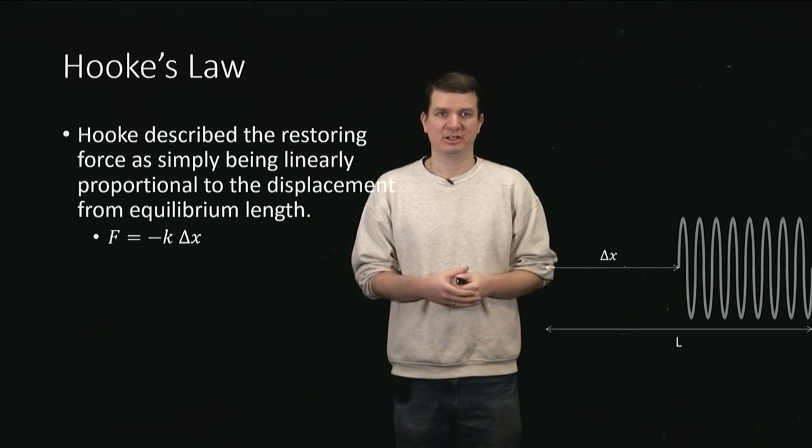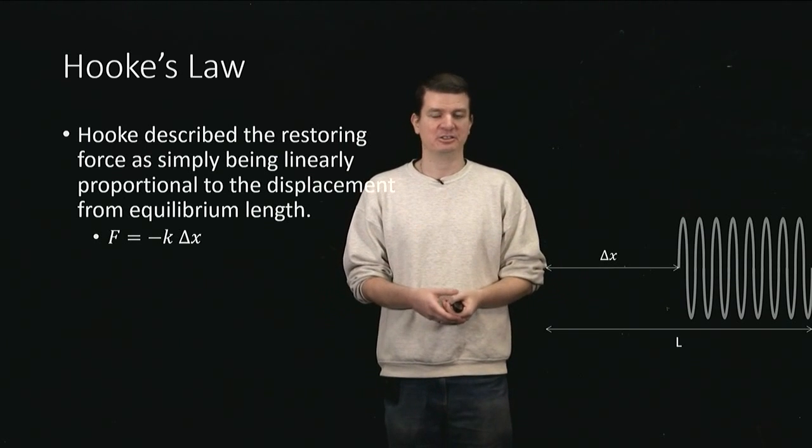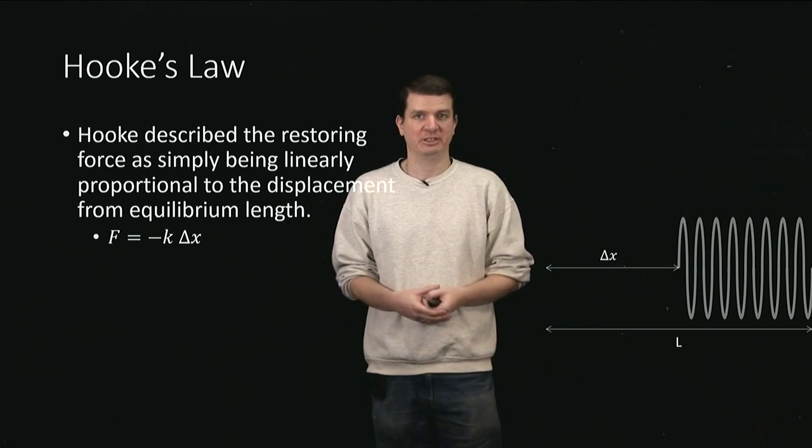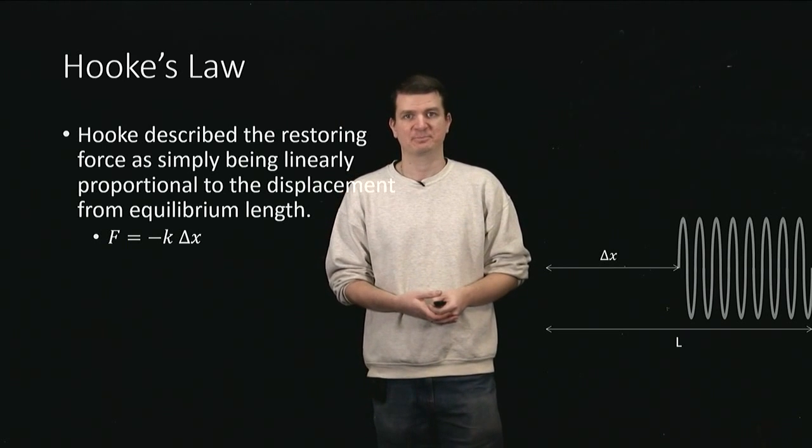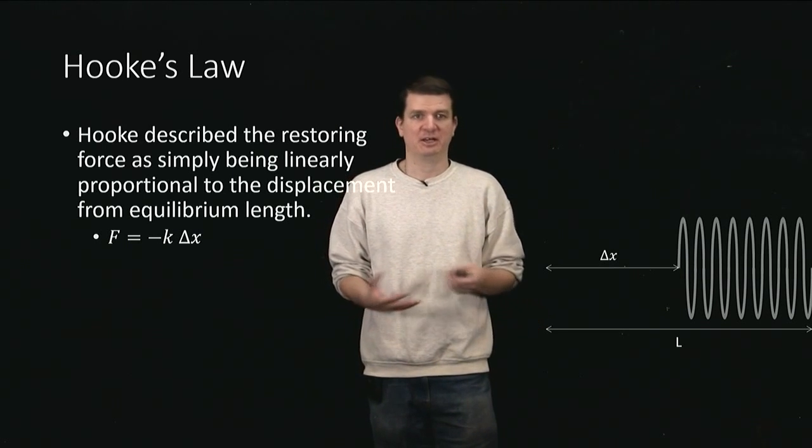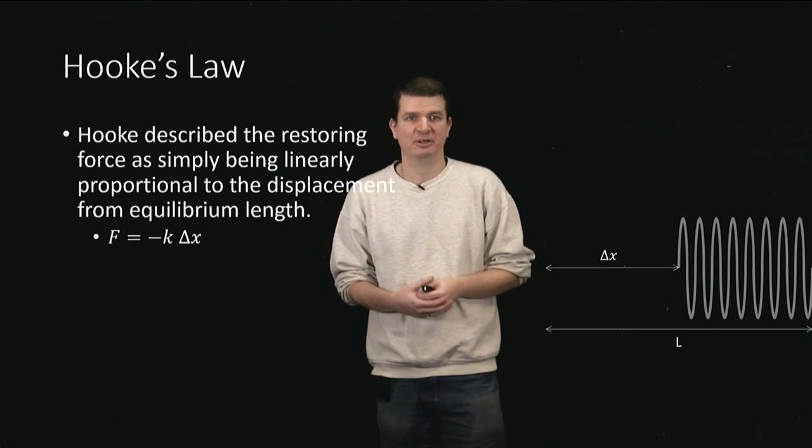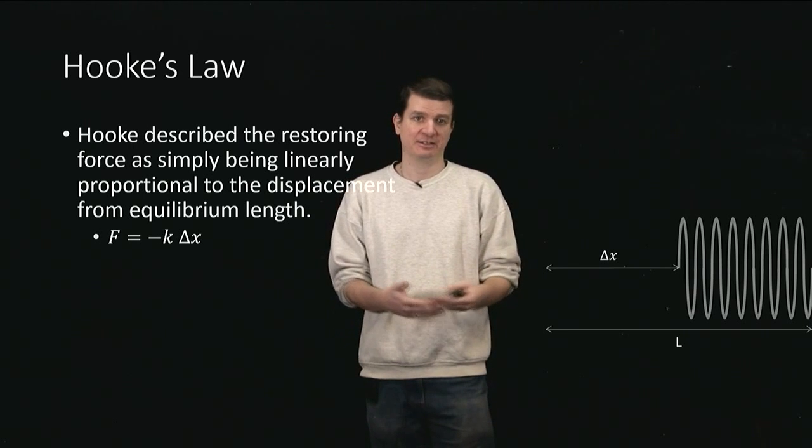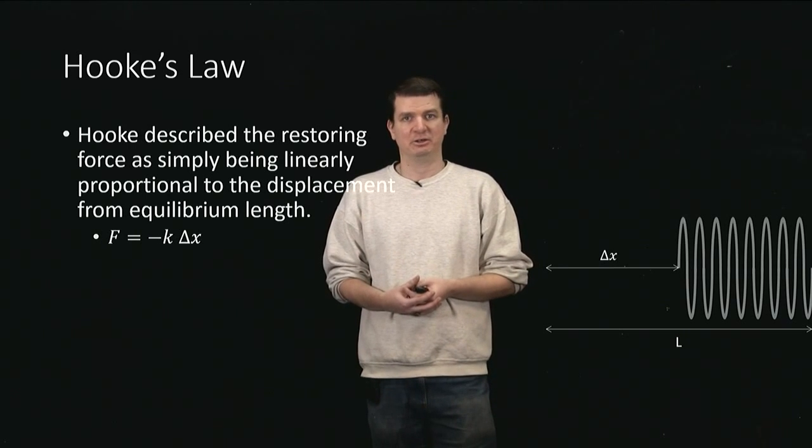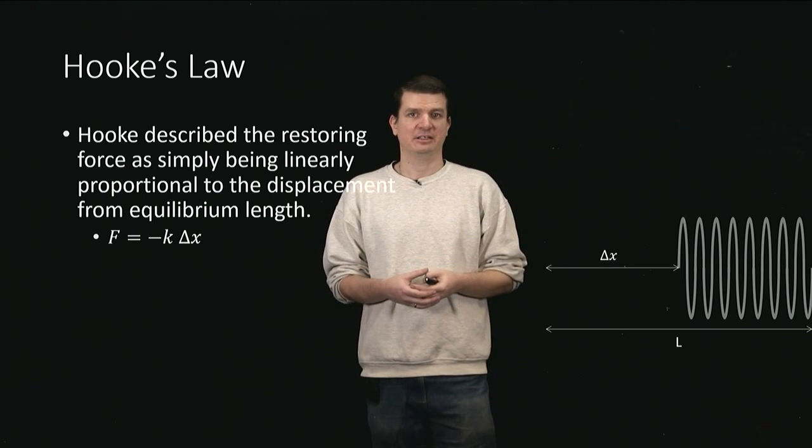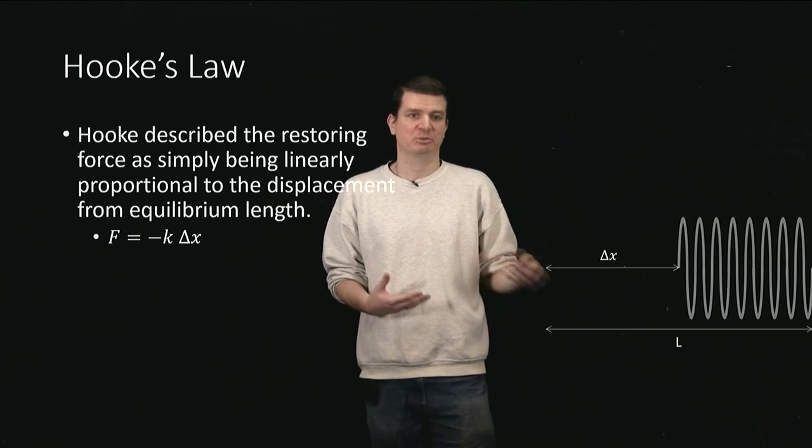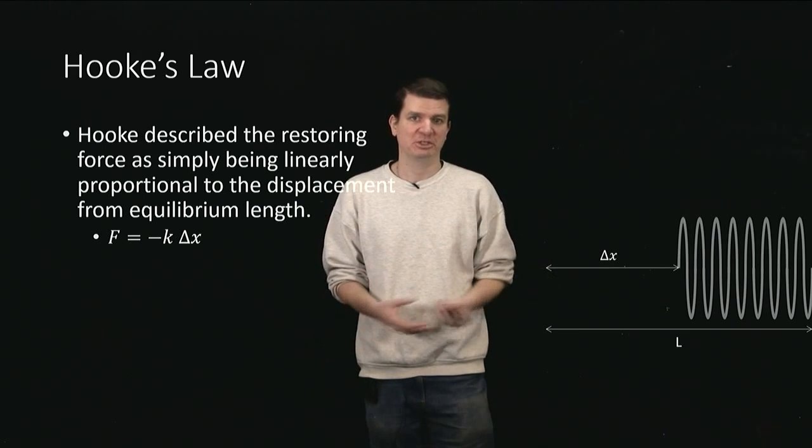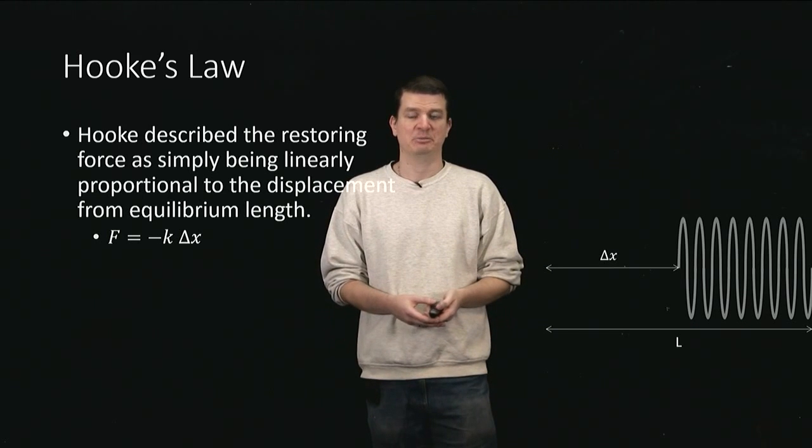Now not everything that looks like a spring actually obeys Hooke's law, but those that do are called Hookean springs. And it's quite a big group of objects. And there are limits to how well this works, because if you compress or stretch something too far you tend to actually break it. But for a large range of displacements and a lot of different objects, this law actually holds. And we can use it then to understand what's going to happen as we compress a spring or as we stretch a spring. And we can use it to form larger, more complicated systems that we can then explore the dynamics of.